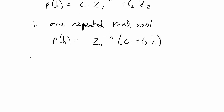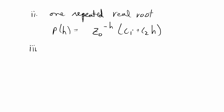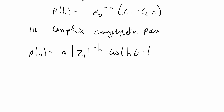The third possible case is that you have a complex conjugate pair as R1 and R2. For case three, the formula is a bit more complex: rho of h equals a times the magnitude of z1 to the negative h, times cosine of h*theta, plus b.